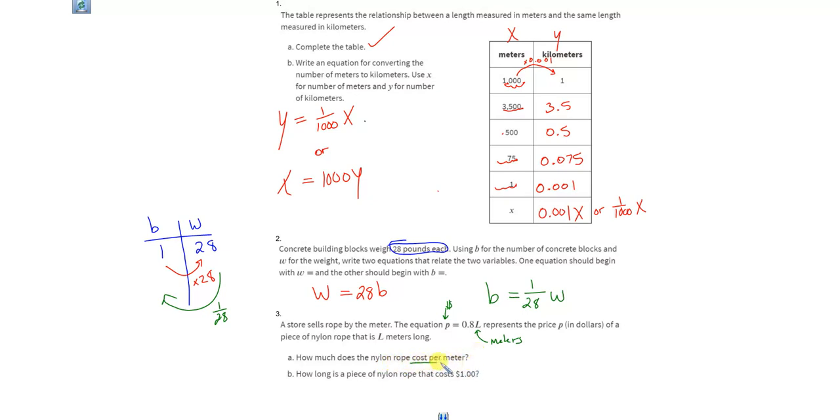Well, anytime they ask you a question like that, how much is it costing per meter, they're really just asking you for the constant of proportionality. You're paying 0.8 for each meter length, because if that L was one, then the price would be 80 cents. This is another way to write 80 cents.